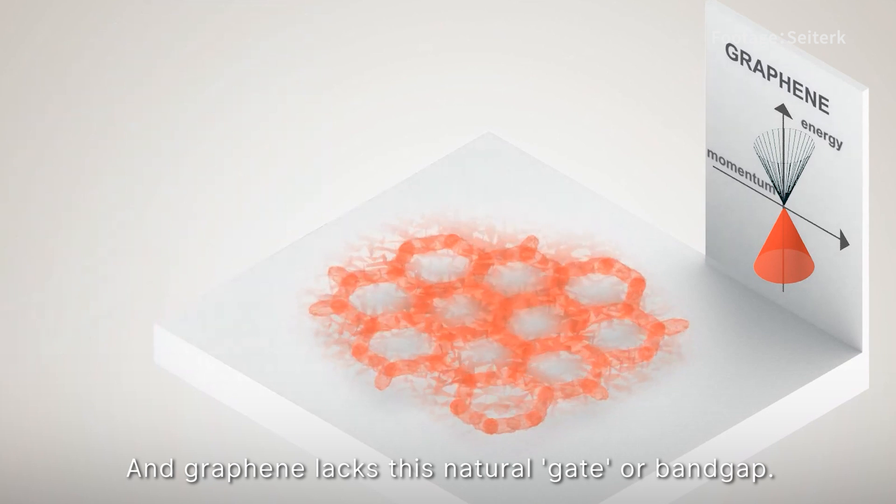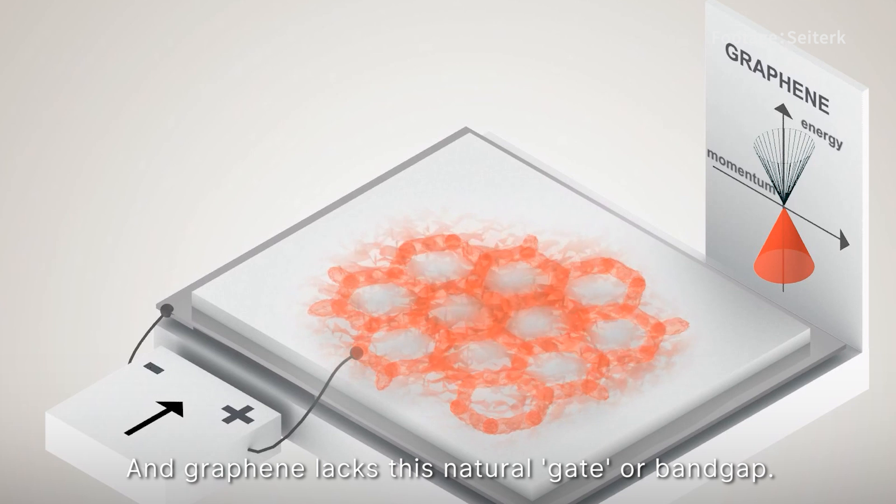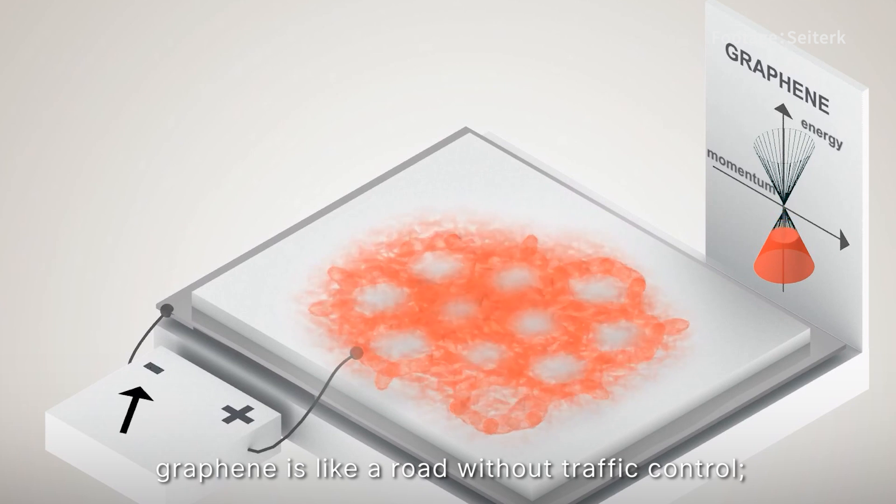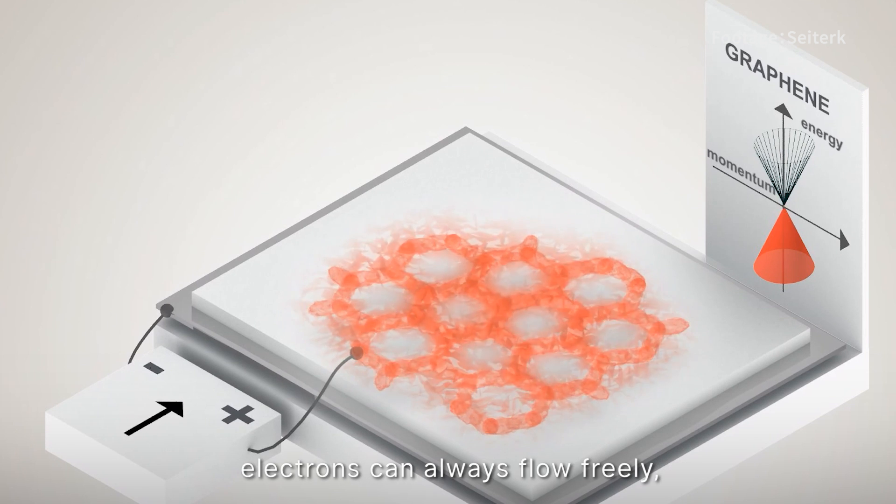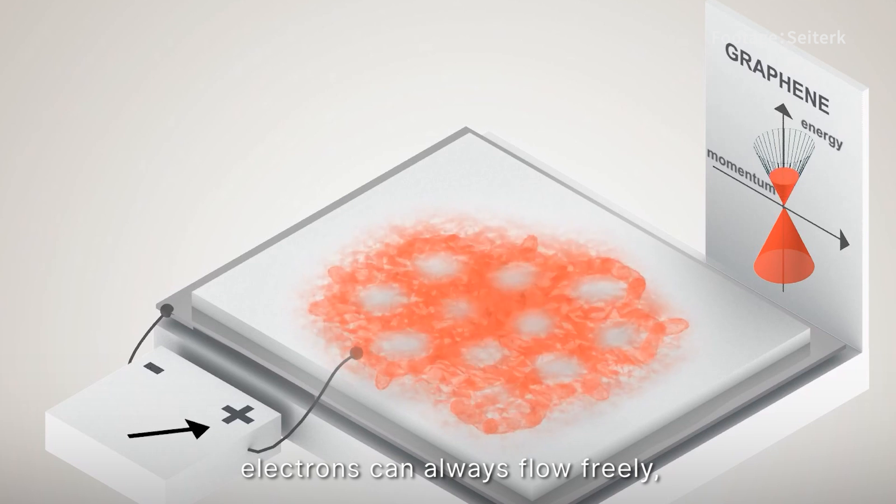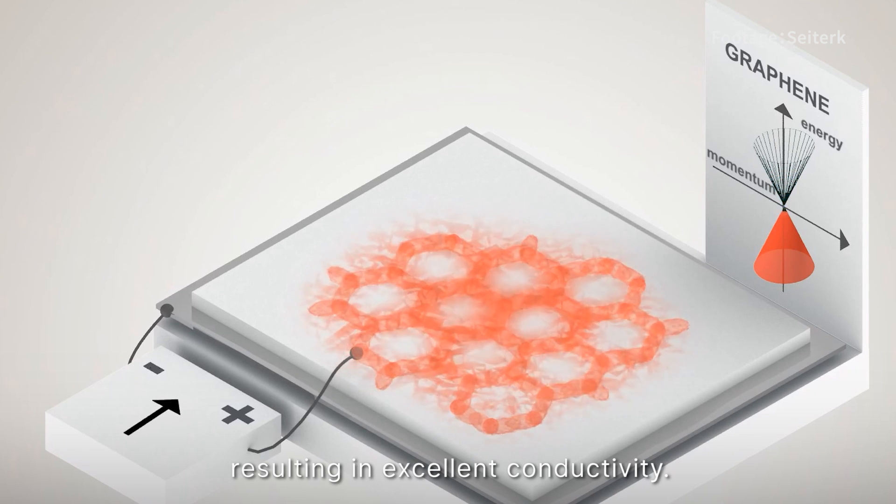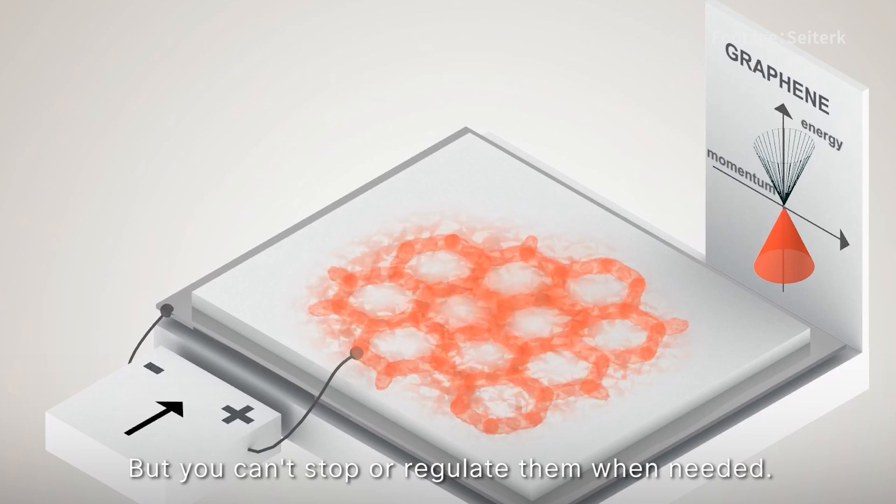Graphene lacks this natural gate or band gap. Without a band gap, graphene is like a road without traffic control. Electrons can always flow freely, resulting in excellent conductivity, but you can't stop or regulate them when needed.